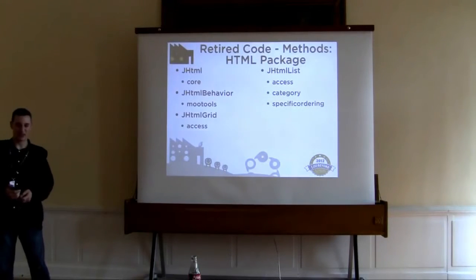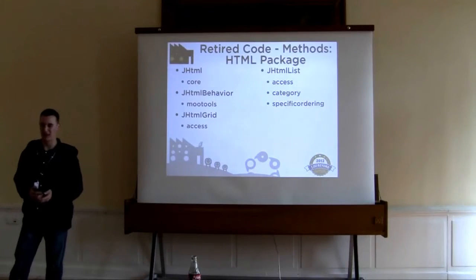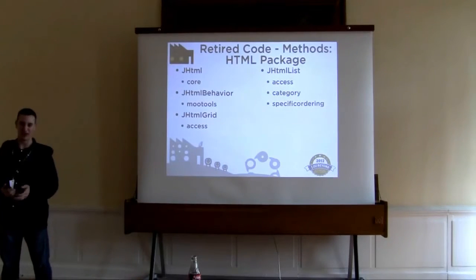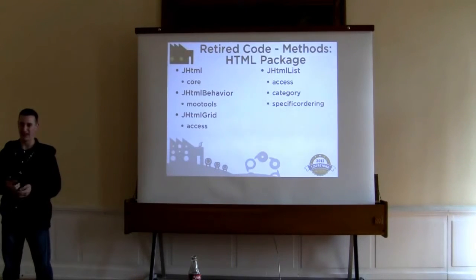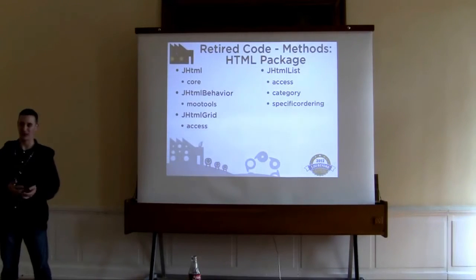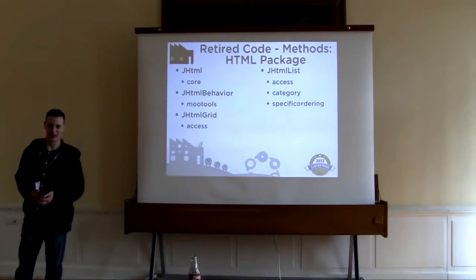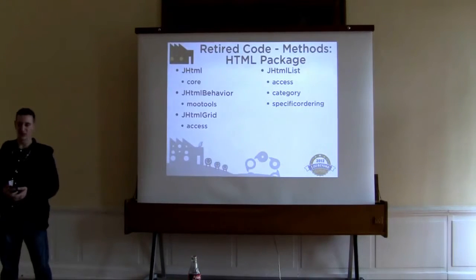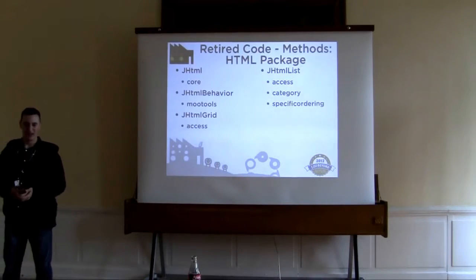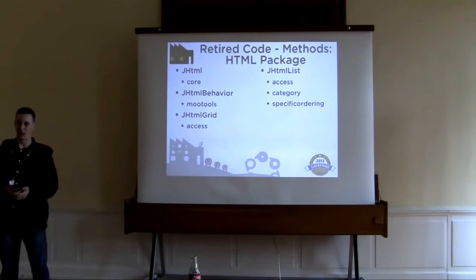In the HTML package, we've removed a few methods. The first two were methods that used to call in the JavaScript framework — those were replaced by JHTMLBehaviour's framework method. In JHTMLGrid, the access method, which used to let you change the access by clicking it in CMS 1.5, was removed since it did not work with the new ACL. In JHTMLList, the access method was replaced by JHTMLAccess's own methods, the category method is replaced by JHTMLCategory, and the specific ordering method is replaced by ordering.